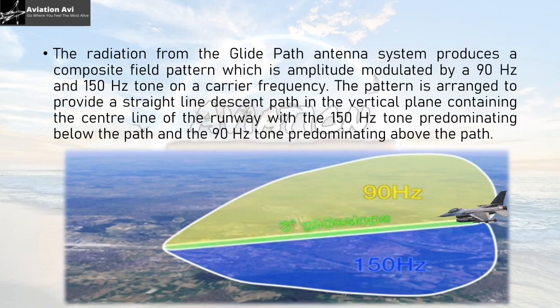The 90 Hz lobe is above the glide slope and the 150 Hz lobe is below the glide slope. Radiation from the glide path antenna system produces a composite field pattern in the same manner as the localizer — amplitude modulated by 90 Hz and 150 Hz on a carrier frequency. The pattern provides a straight-line descent path in the vertical plane containing the center line of the runway, with the 150 Hz tone predominating below the path and 90 Hz tone above the path.